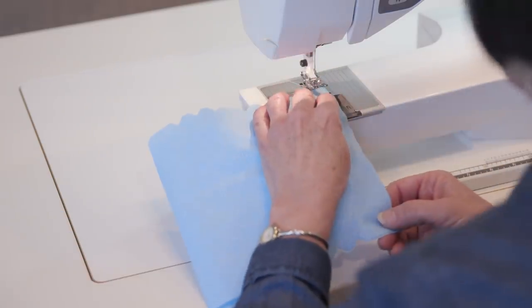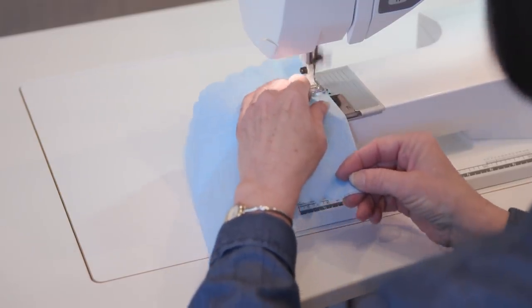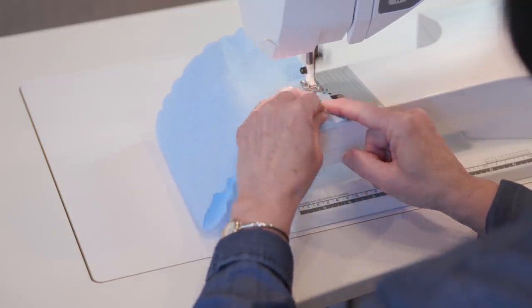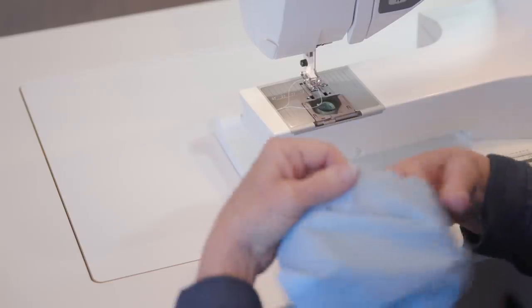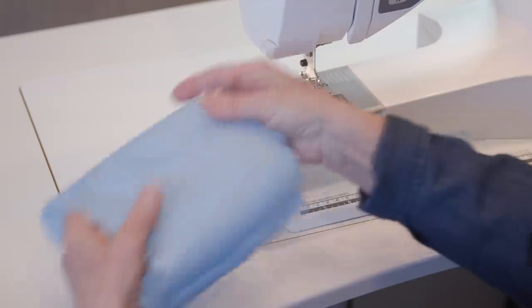Sew a seam across the bottom edge of the mask stitching one-fourth inch from the edge. Flatten with your fingers. Do not use an iron. The bottom seam will now be hidden on the inside. Flatten the seam with your fingers. Don't use an iron as it could melt the fabric.